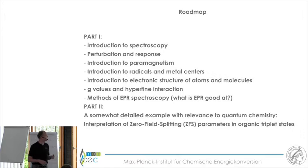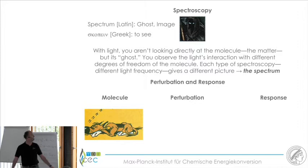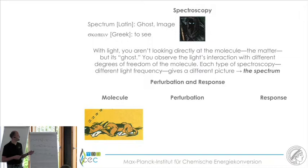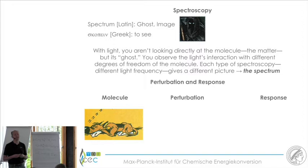As a reminder, spectroscopy comes from the Latin word spectrum, meaning ghost or image, combined with the Greek word skopein, meaning to see. With spectroscopy we do not look directly at the molecules; we look at the ghost or image of the molecule. What we basically do is make perturbations — we irradiate our molecules with light of various wavelengths — and then we detect the response of the molecules.